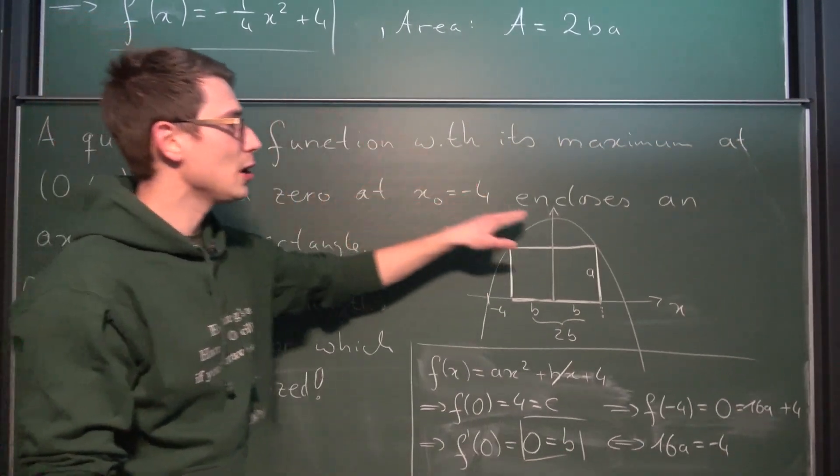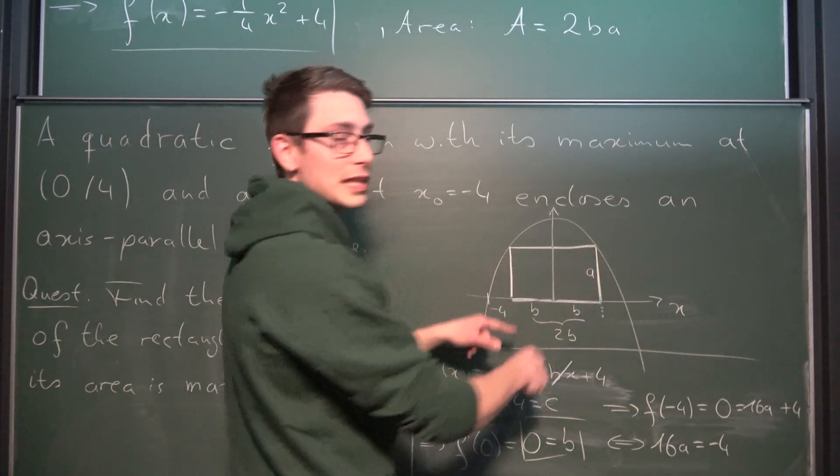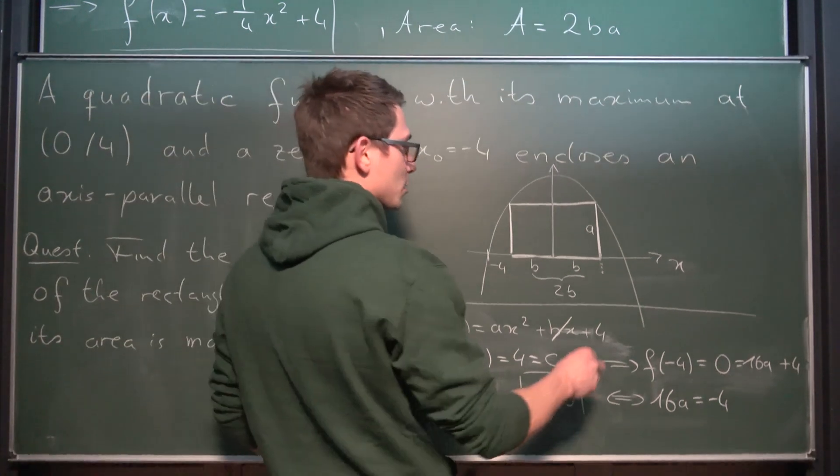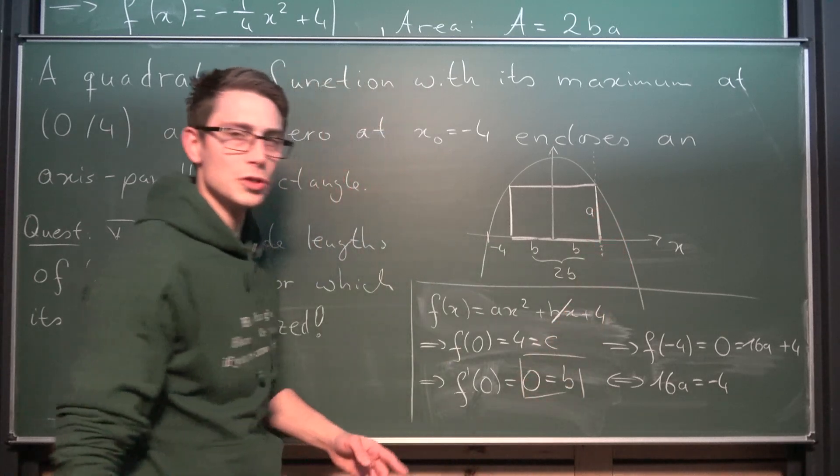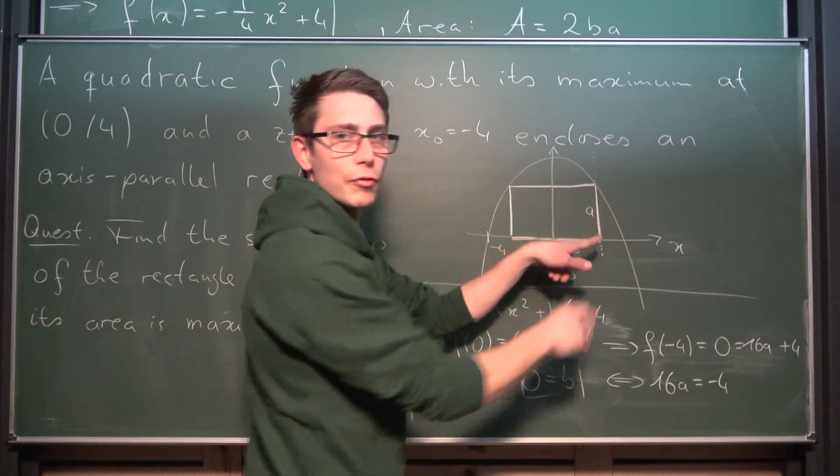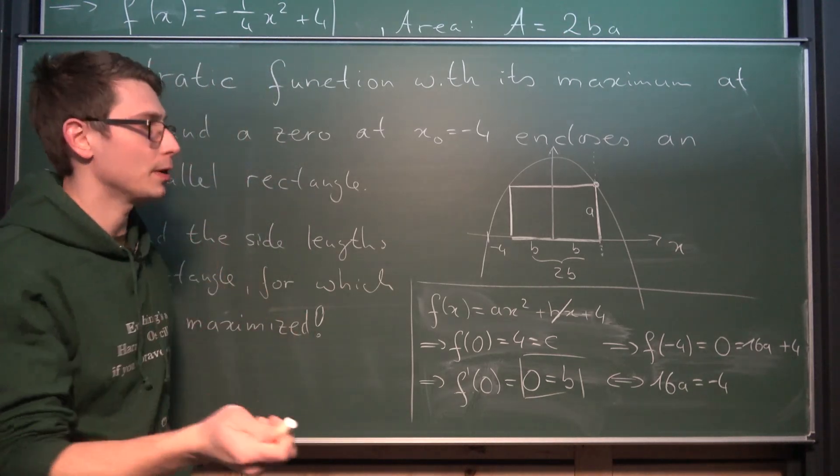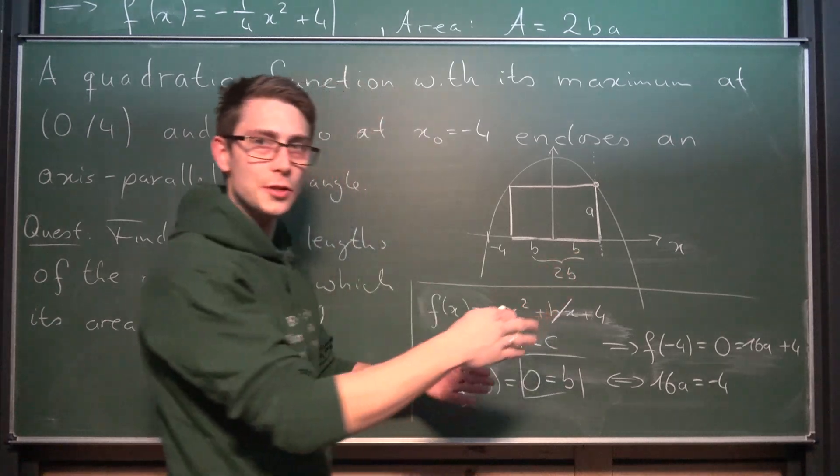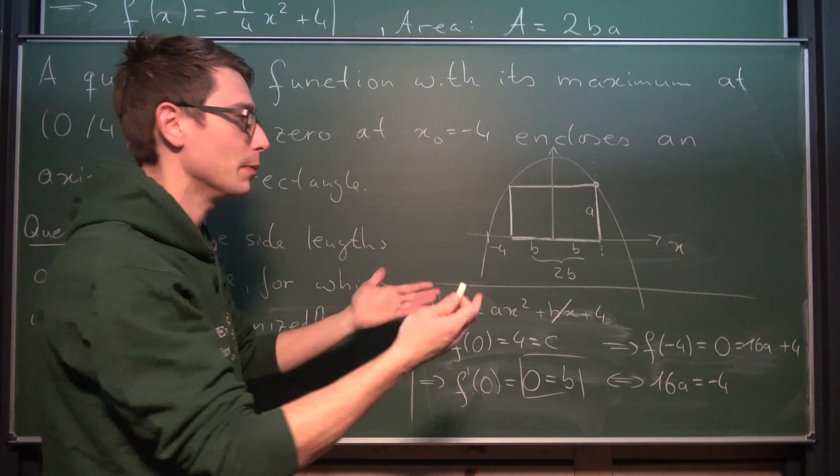So the area is going to be as follows A is equal to 2 times b times a. But this right here is a multivariable function right now and that ain't good. That would be a total mess. You can most certainly do it but it's not fun at all. We want to trace this back to a single variable function. And this is where the next property comes in. Namely that our parabola encloses our rectangle. Meaning it's touching our rectangle exactly at the upper corners. And this is very good.